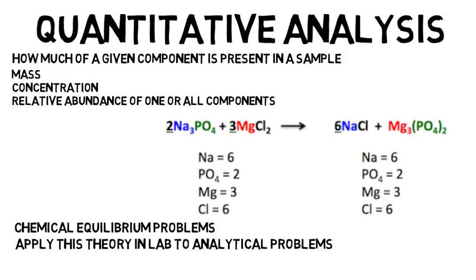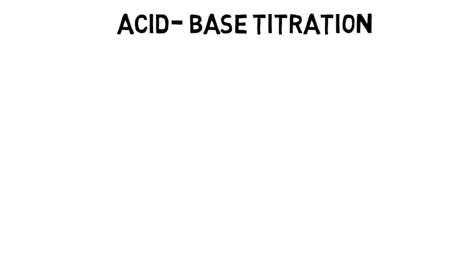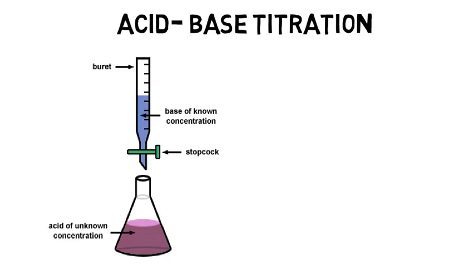There are many quantitative analysis techniques, but one example you may be familiar with is an acid-base titration. In this technique, you'd be able to determine the concentration of, let's say, an acid by neutralizing it with a base of a known concentration.